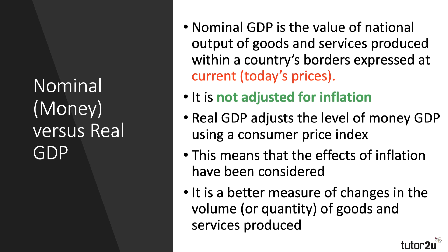Nominal or money GDP is the value of output at today's prices — at current prices. For example, if you buy a meal deal at the supermarket for four pounds, that is a value of spending at today's prices; it's not adjusted for inflation.